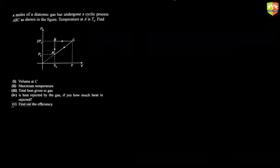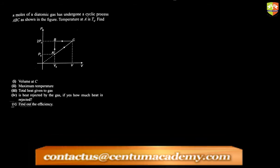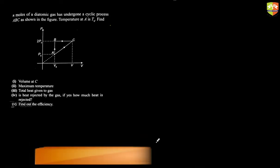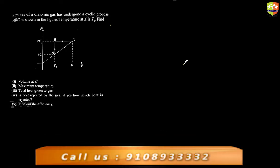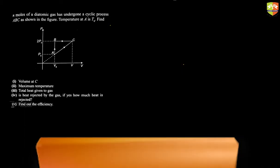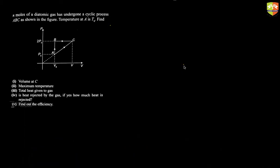Let's start solving this problem. We'll take questions as we go. For volume at C, you need to solve in terms of V₀ and P₀. Now tell me: what kind of process is A to C? Is it isothermal, isochoric, isobaric, or adiabatic?